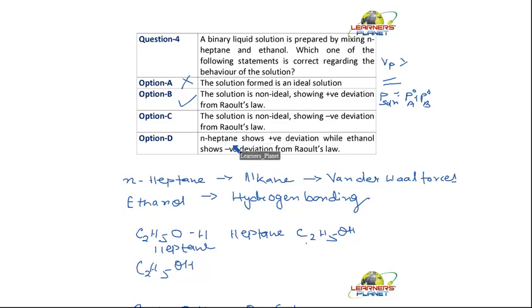N-heptane shows positive deviation while ethanol shows negative deviation from Raoult's law. Is it the case? No. So what is the right option? It is option B.